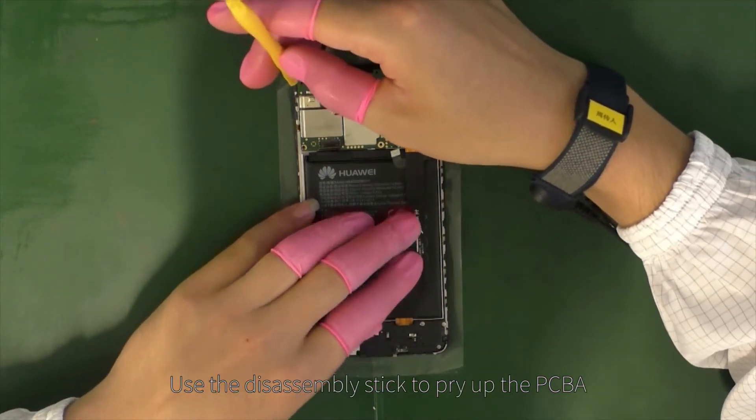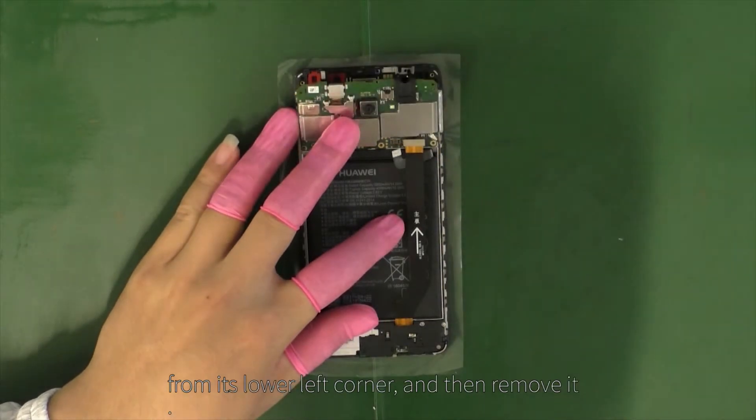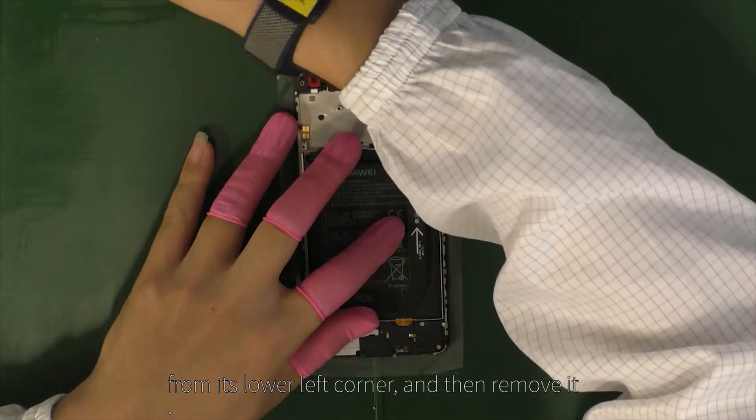Use the disassembly stick to pry up the PCBA from its lower left corner and then remove it.